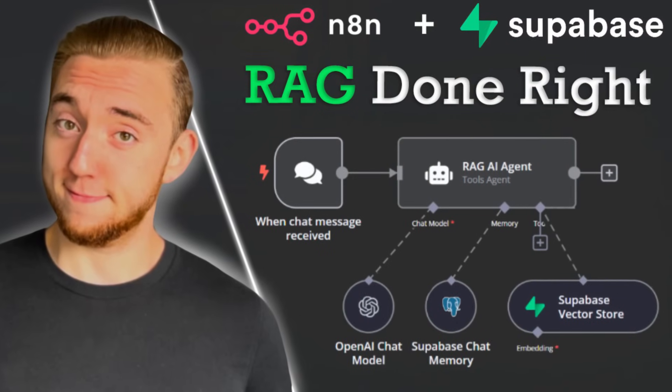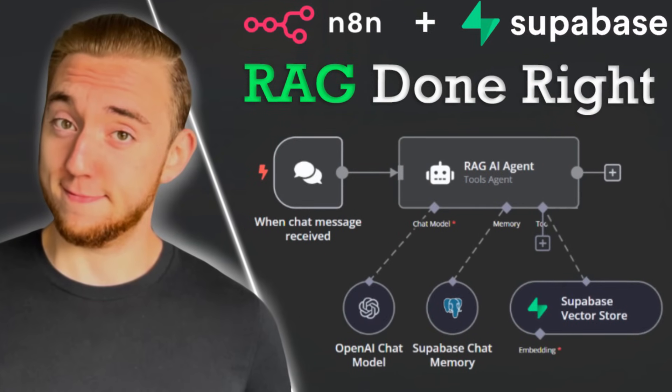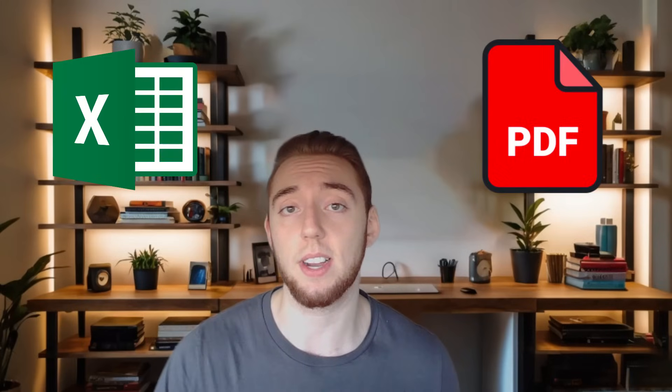Last month on my channel I built one of these RAG AI agents, and a lot of people extended my workflow to make it work for their use cases. Everything with the actual vector database using Supabase seemed to work phenomenally for everyone. The tricky part came up when they wanted to extend the workflow to work with other document types like PDFs or Excel documents.